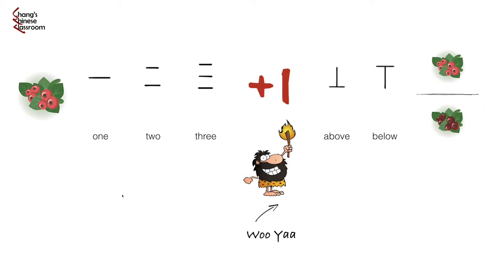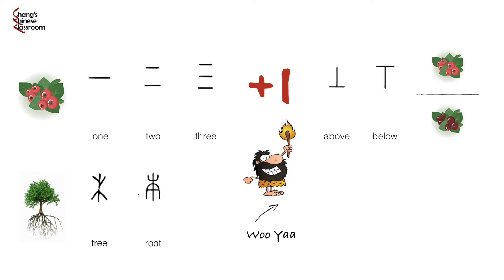Similarly, we need to record the information about where we get these berries. We already have the character for 'tree' on the wall, but we need to remind ourselves we climb from the bottom of the tree to the top to get these berries. Starting from the bottom, using the plus-one principle, we add one stroke at the bottom of the original character for tree to indicate the bottom of the tree. And then similarly, could you think of how we record the top of the tree? Of course, we add another stroke on top — that's the top edge of the tree, our destination. That's how we get these characters.